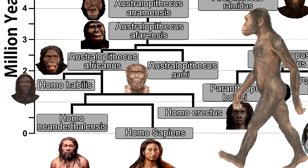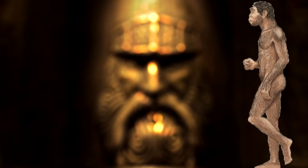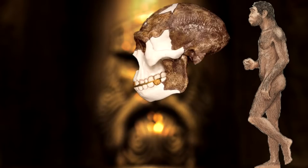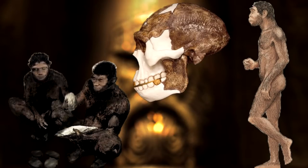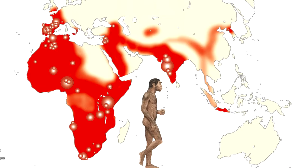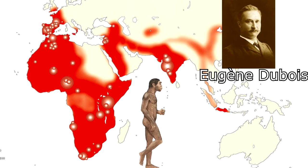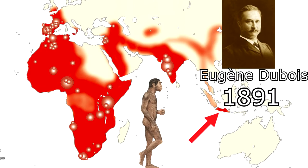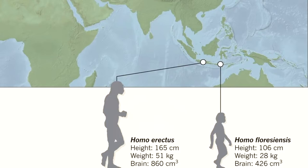By two million years ago, hominins walked and ran on two feet just as well as modern humans, but they still had relatively small brains. Consider one of the first members of our genus: Homo erectus. Homo erectus had a body that looked a lot like a modern human, a larger brain than Australopithecus, and probably made stone tools — both of which suggest a much greater level of intelligence. Homo erectus is the first member of the human lineage to leave Africa, spreading as far as Southeast Asia. The first remains now recognized as Homo erectus were discovered by Eugène Dubois on the Indonesian island of Java in 1891.